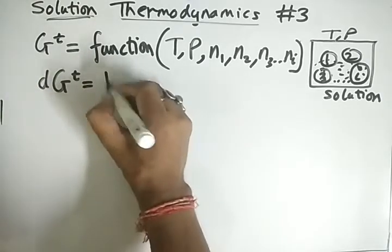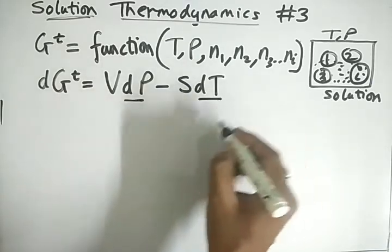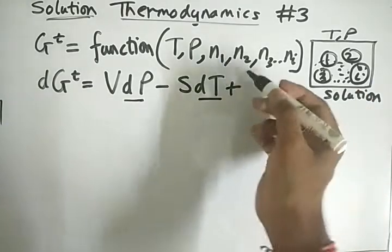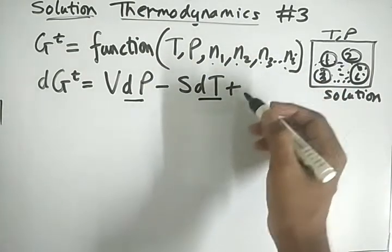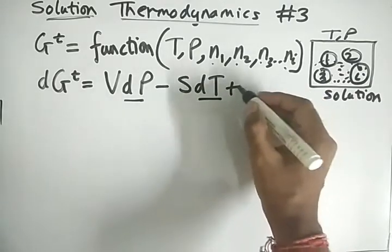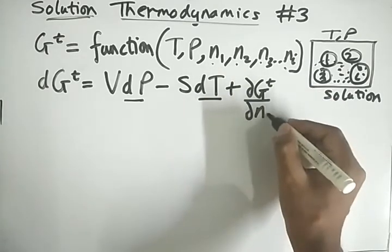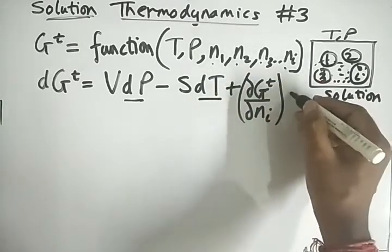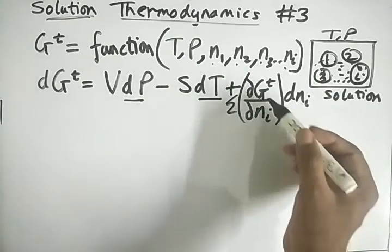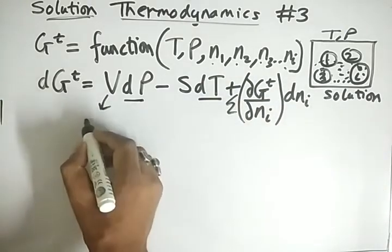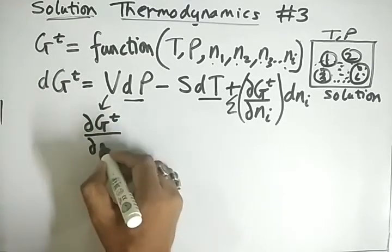We add the change in compound moles, which is the summation of the partial differentiation of Gt with respect to ni, multiplied by dni. Here V is the partial differentiation of Gt with respect to P — that is, del Gt upon del P — keeping temperature and all ni constant.